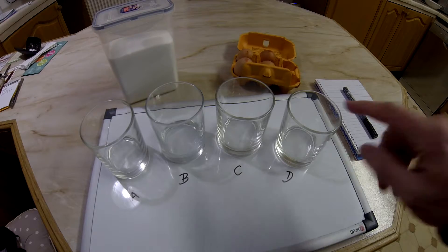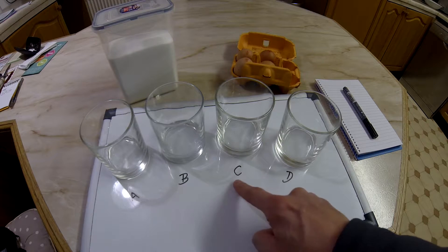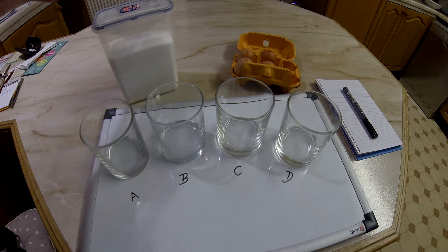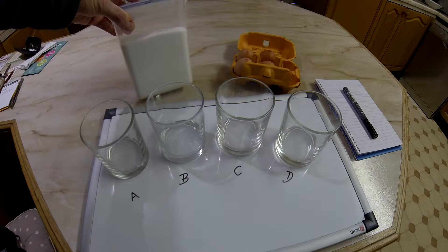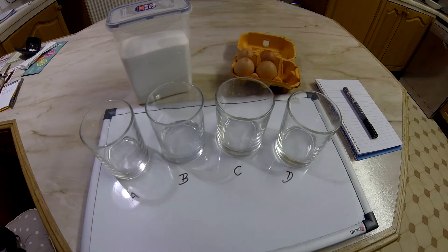So I have four identical glasses here and they're labeled A, B, C, and D. I have some salt, just normal cooking salt, and we have some eggs. We have four eggs, one for each glass.